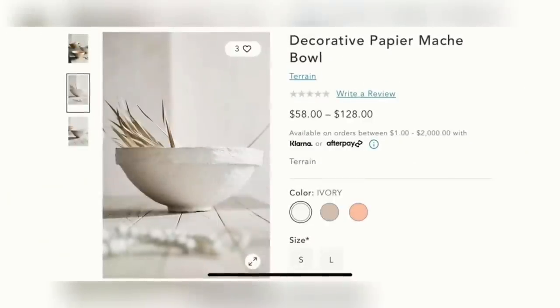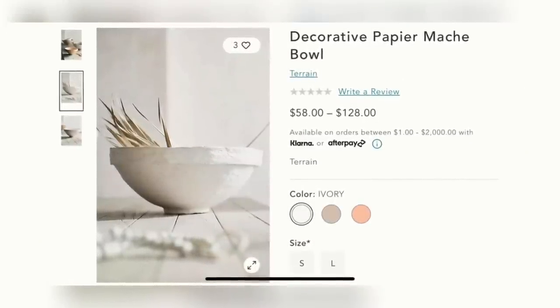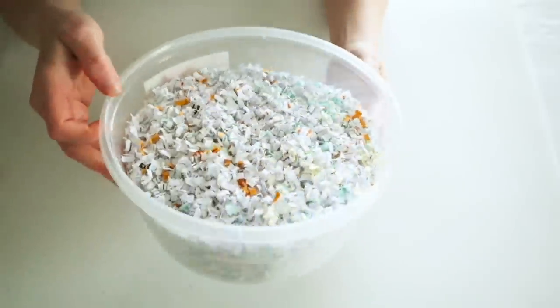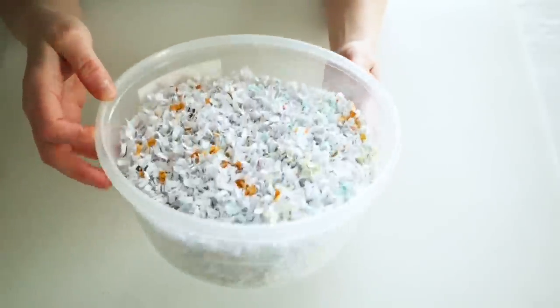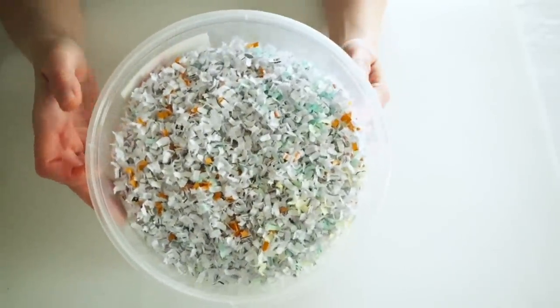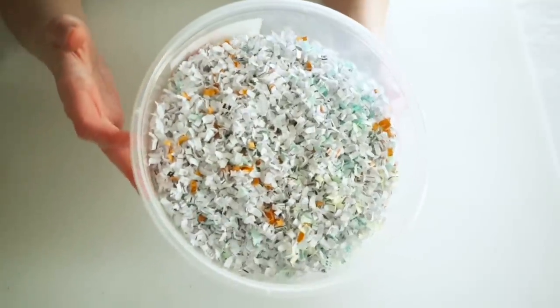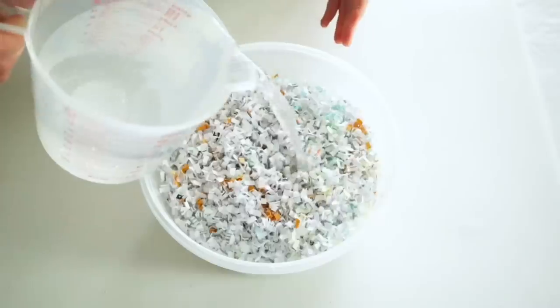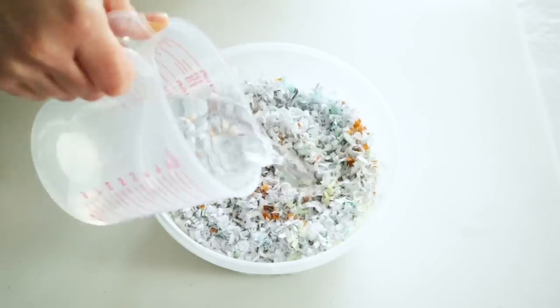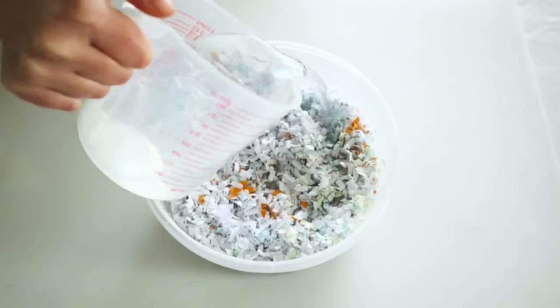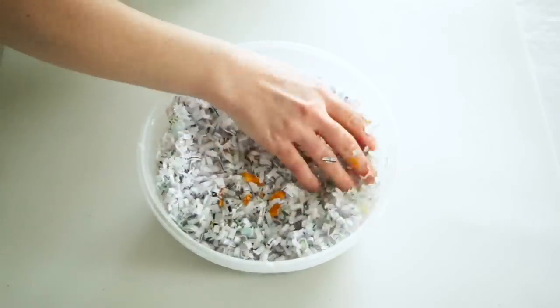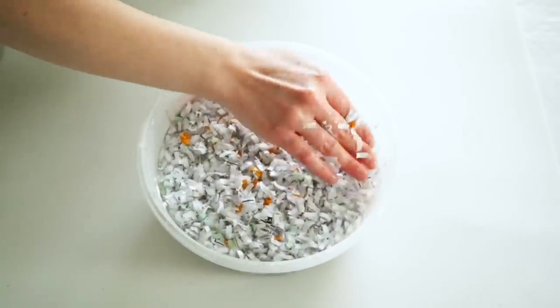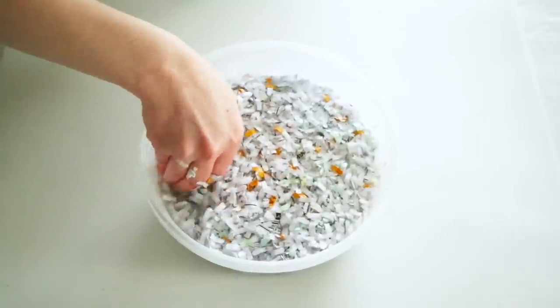This final project is inspired by these paper mache bowls from Anthropologie. And I've been wanting to make one of these for a little while, so I just grabbed some paper that had been shredded in our paper shredder. Now if you don't have a paper shredder, you can always hand shred some paper. I just got enough to fill up this little bowl, and I'm gonna add in a bunch of really hot water until it is covering all the paper. And once I had enough water in there, I just kind of pushed the paper down into there, and I'm gonna let this sit for at least an hour.